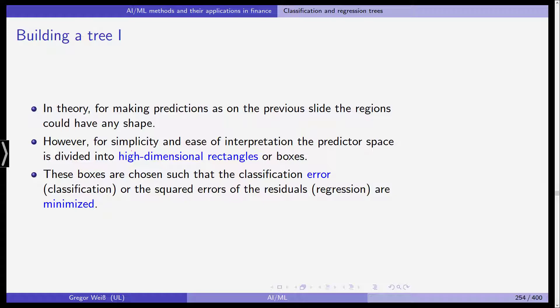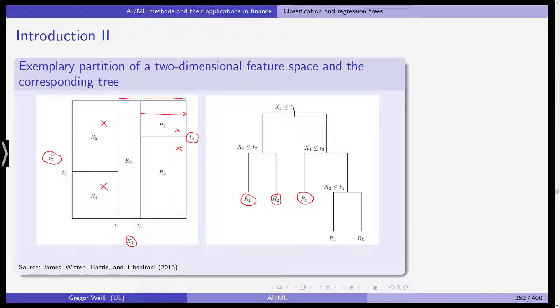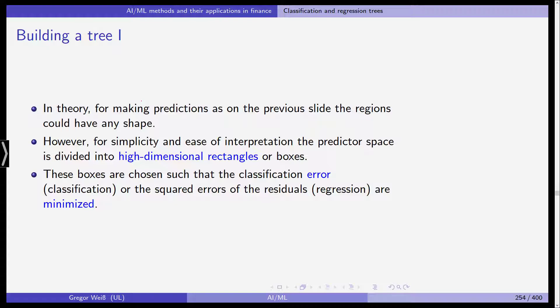How do we build a tree? In theory, the regions could have any shape — circles, rectangles, or irregular shapes. However, for simplicity and ease of interpretation, the predictor space is divided into high-dimensional rectangles or boxes. These boxes are chosen such that the classification error or the squared error of the residuals in regression analysis are minimized. Theoretically, it's possible to partition the predictor space into an infinite number of boxes, making it computationally infeasible to consider any possible partition of the feature space.